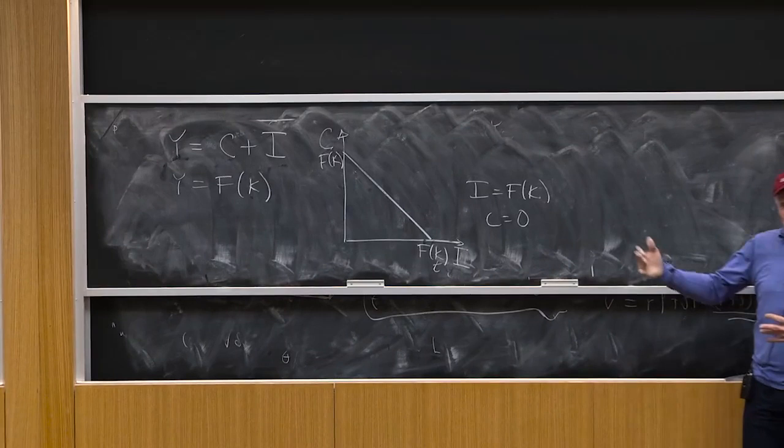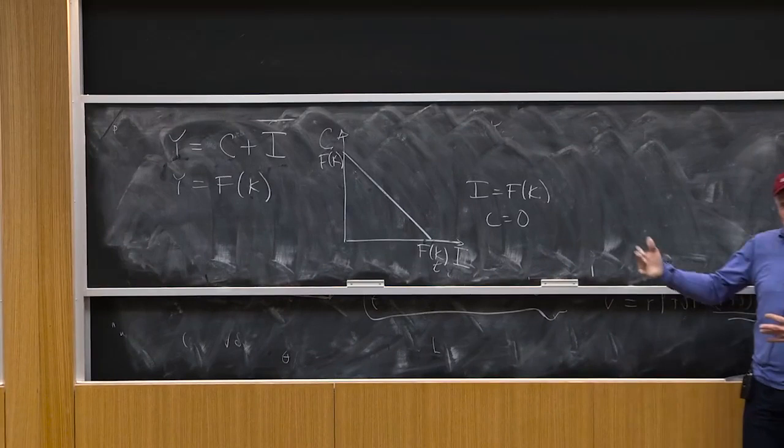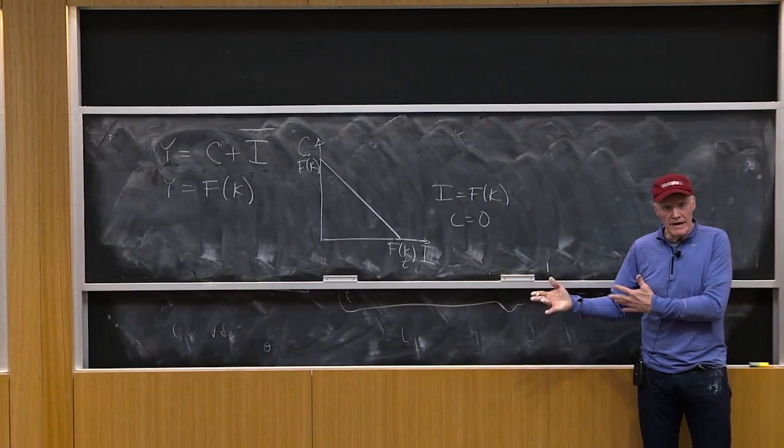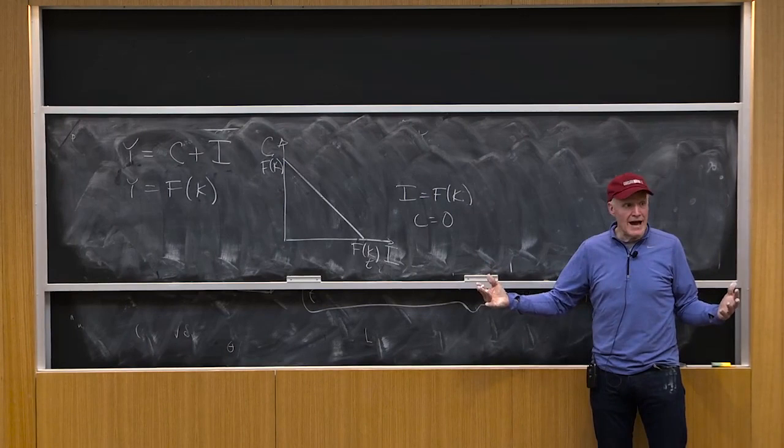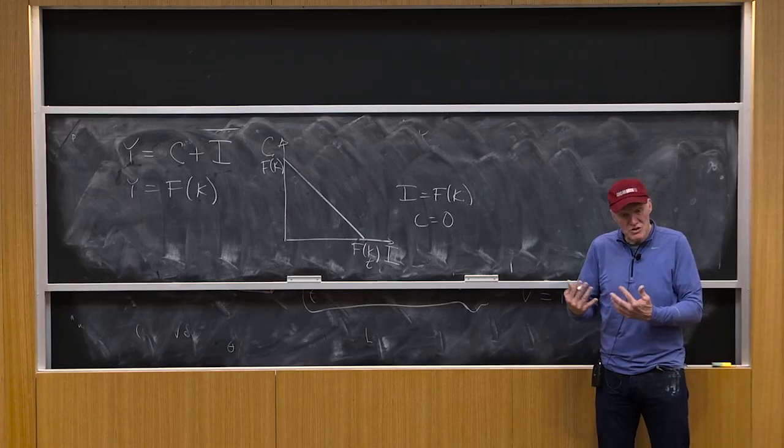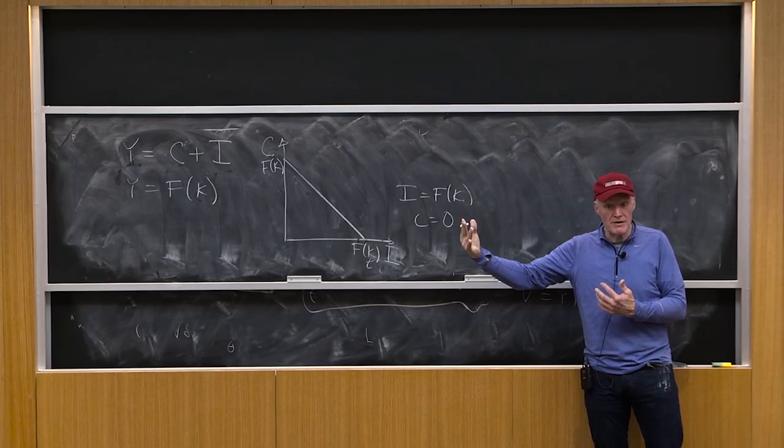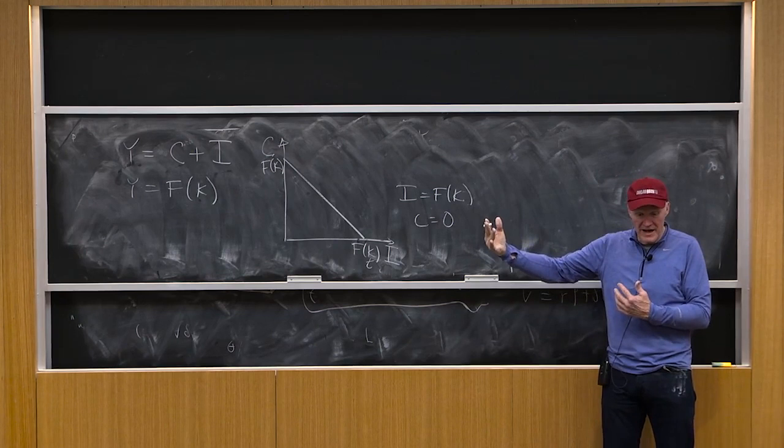So in this model, the rising supply price of capital is not going to come from the technology side of the problem. It's going to come from the consumption side of the problem. If we want to invest a lot in capital, we've got to sacrifice a lot of consumption. And the desire to smooth consumption over time is going to take the place of a rising supply price. We want to smooth our consumption out over time.